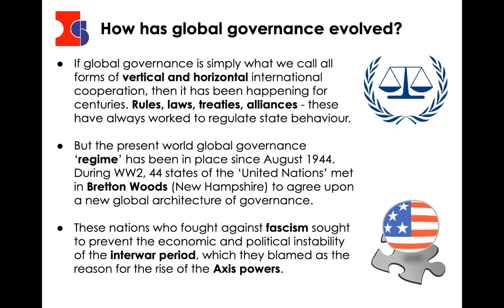So how has global governance evolved over time? Global governance has always been there — there have always been treaties, especially in European history. There have always been rules, laws, treaties, and alliances that have regulated the behaviour of states. But it's really sped up and deepened since World War II.